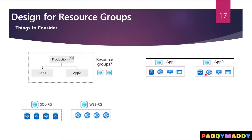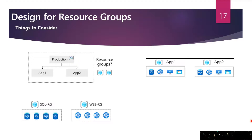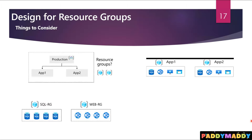You need to consider grouping by department, by location, or by billing cost center. When it comes to resource lifecycle, think about whether you want to deploy updates or delete resources at the same time. Also consider administration overhead — how many resource groups you want to manage, and whether you have a centralized or decentralized administrator model. Consider resource access control — at what level of the resource group you want to apply policies, Azure policies, Azure rules, or resource locks.